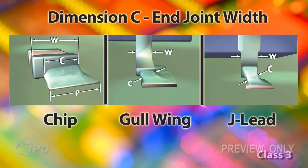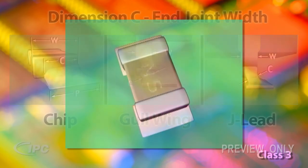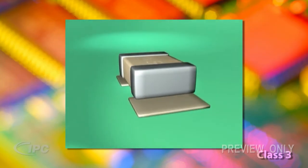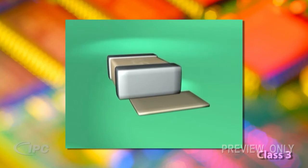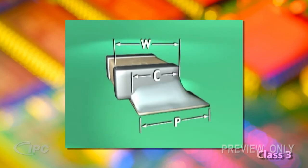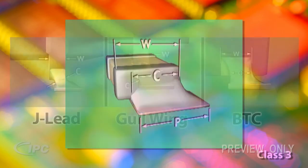Now let's look at End Joint Width, or Dimension C. The width of a chip component solder joint at its narrowest point must be at least three quarters of the width of the component termination, or 75% of the width of the land, whichever is less.